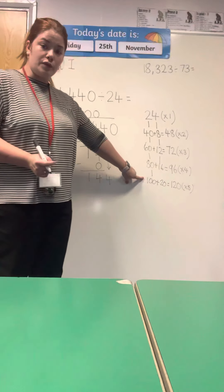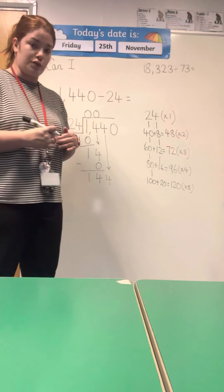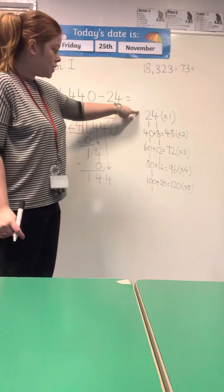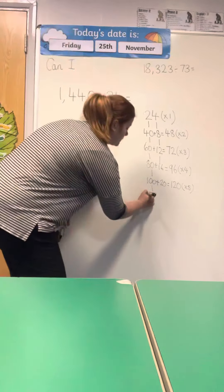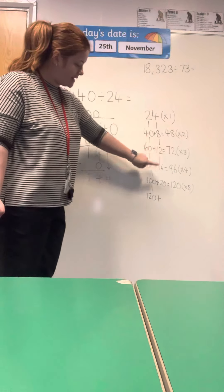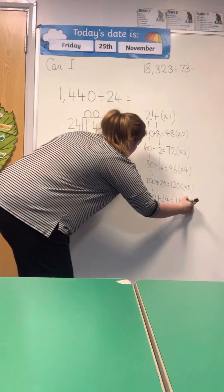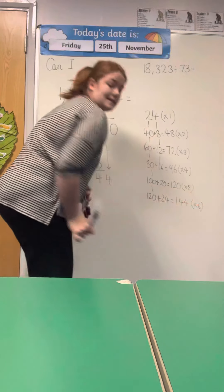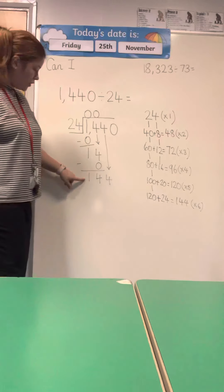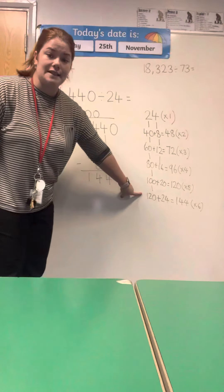If I look at my multiples of 24, I've only gone up to 120, so I need to do another multiple of 24. Counting in my 20s: 20, 40, 60, 80, 100, 120, and in my ones: 4, 8, 12, 16, 20, 24 — that gives me 144, and that's times 6. So I can now go back to my division: 144 divided by 24, and I can see that's 6.